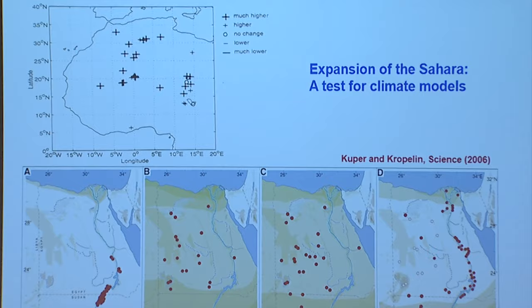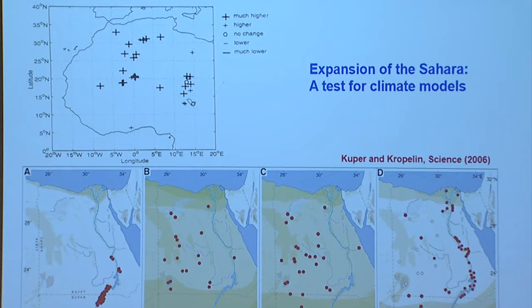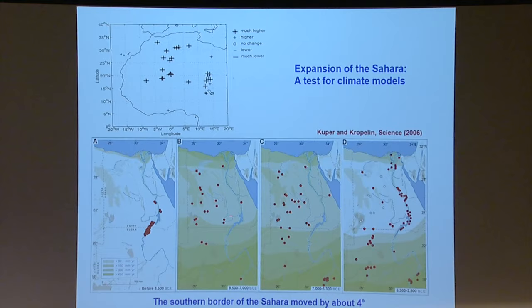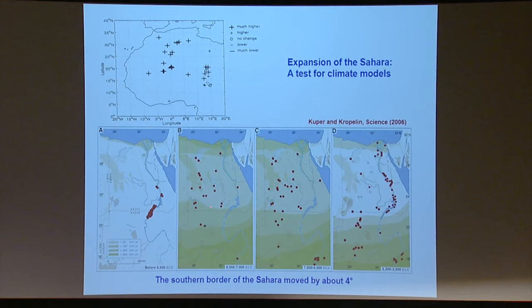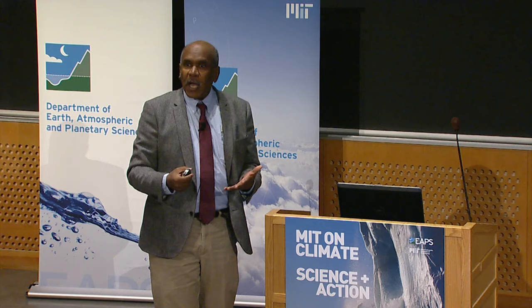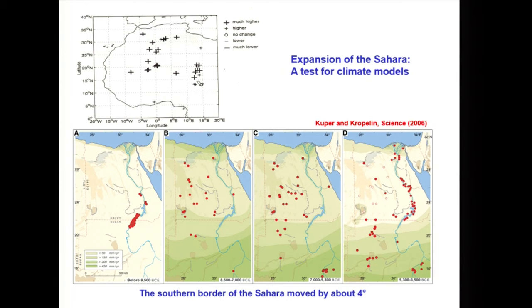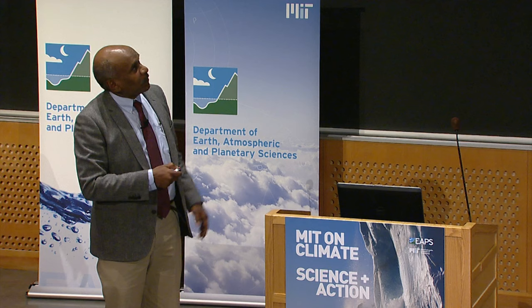A reconstruction of the last 10,000 years shows how Saharan climate evolved, with human settlements scattered across the desert area. With climate change, people moved to the Nile Valley, coinciding with the initiation of the pharaonic civilization around 5,500 years ago. So not all climate change results in negative impacts — the emergence of the pharaonic civilization was actually related to the expansion of the Sahara Desert.